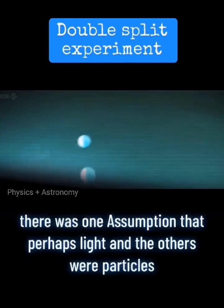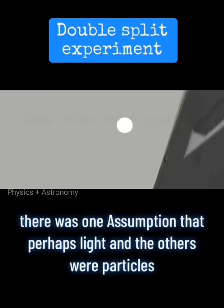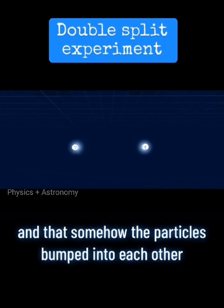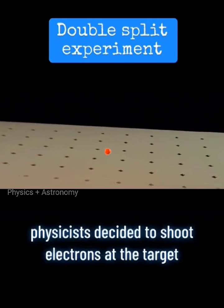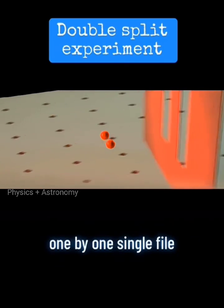There was one assumption that perhaps light and the others were particles and that somehow the particles bumped into each other and flew apart. So, to test this, physicists decided to shoot electrons at the target one by one, single file.